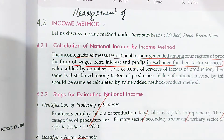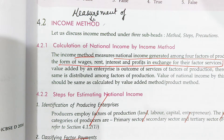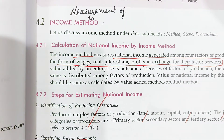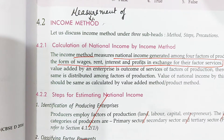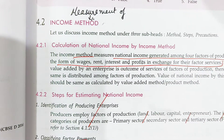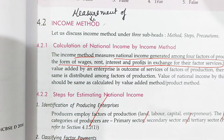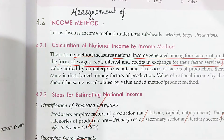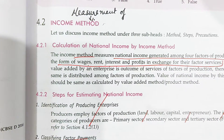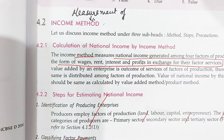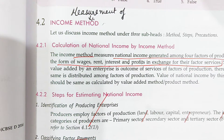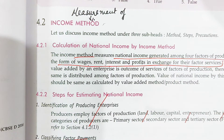National income is the sum total of income received by all the residents of our country by rendering their services. Whatever income they receive, the sum total of that income is called national income. Domestic income is the sum total of wages, rent, interest, and profit which is generated within the domestic territory by both residents as well as non-residents.